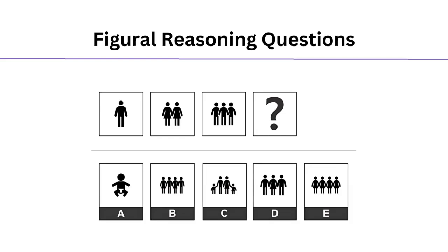Our first question asks us to complete the pattern. The main mistake people make is focusing on one feature and ignoring the rest. Looking at the sequence, we can easily see the number of people in each box is increasing by 1 as it moves to the right. So our missing box will have 4 people inside, allowing us to eliminate option A and D.